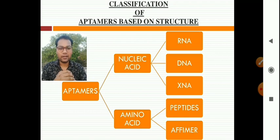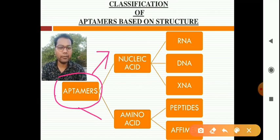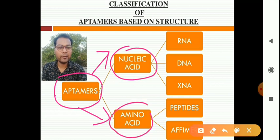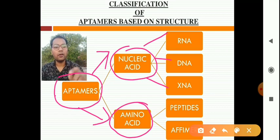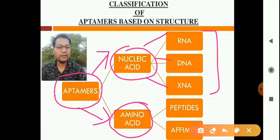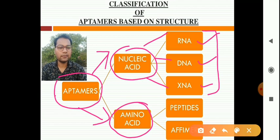Let us now discuss the classification of aptamers based on structure. Aptamers are classified into two main categories: nucleic acid and amino acid. Nucleic acid aptamers are further classified into three categories — RNA, DNA, and XNA. Amino acid aptamers include peptides and ephemers.